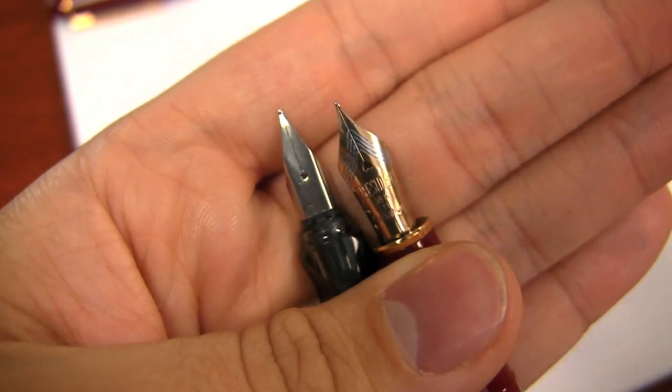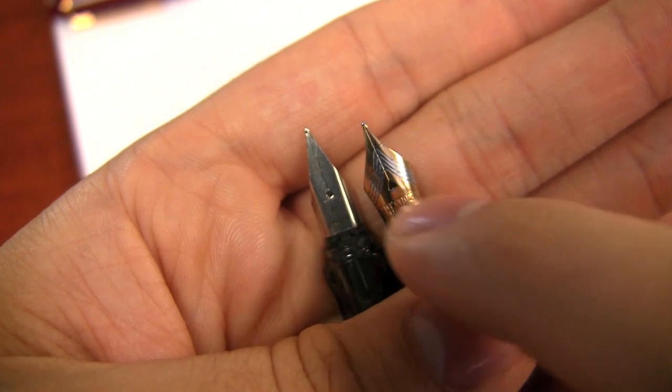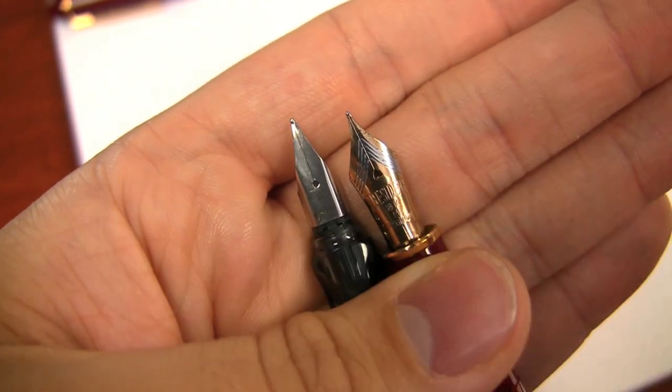So different companies will have different designs. Some nibs don't have them on there. It's not necessarily a requirement, it's all part of the nib design. But that's what that little hole is called, is the breather hole.